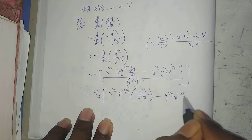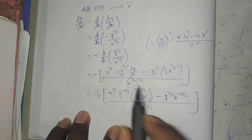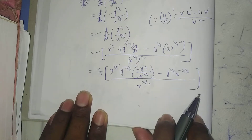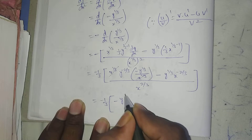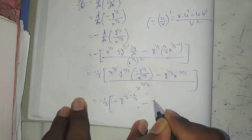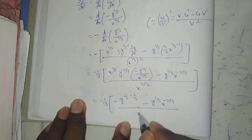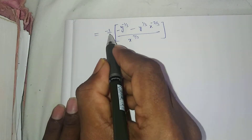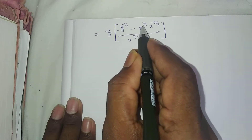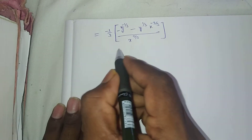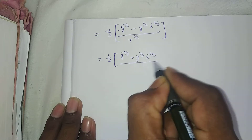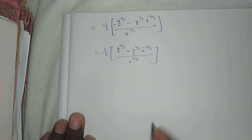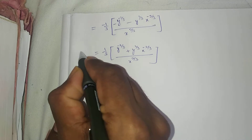Simplifying: d²y/dx² = -[(-1/3)·y^(1/3-2/3+1/3-1/3) - y^(1/3)·x^(-2/3)/x^(2/3)] giving d²y/dx² = -(1/3)·[y^(-1/3)/x^(2/3) + y^(1/3)·x^(-2/3)] / x^(2/3). Taking -1/3 common: d²y/dx² = -(1/3)[y^(-1/3) + y^(1/3)·x^(-2/3)] / x^(2/3).